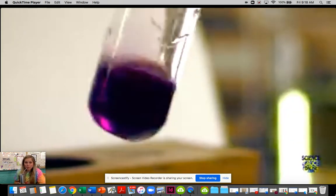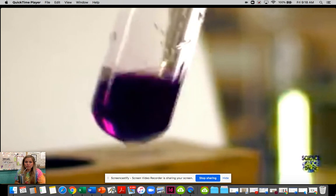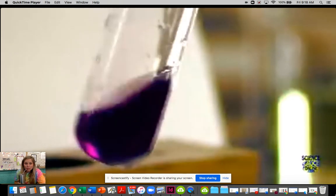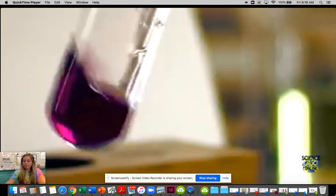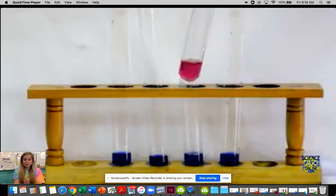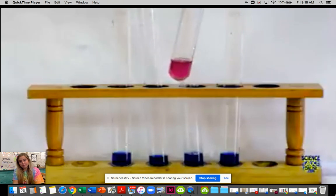The DCPIP might turn pinky purple first. This is because of the acidity. It doesn't reflect vitamin C being present. Keep adding your sample and shaking.